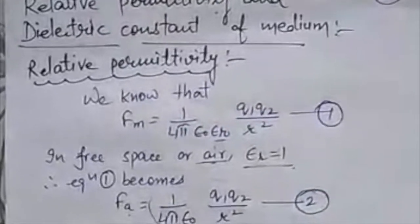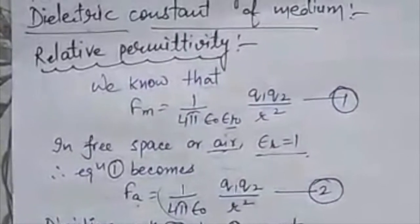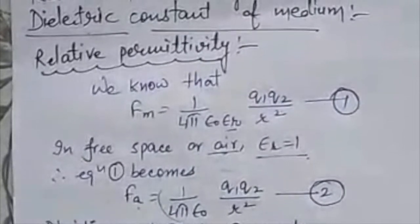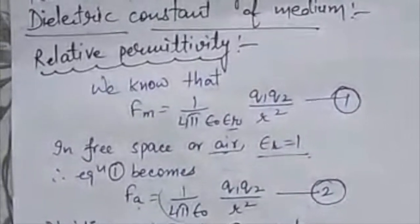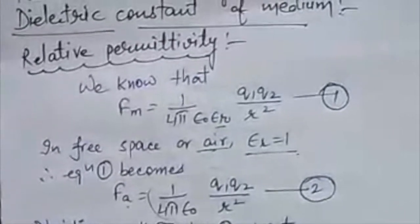Students, let us start the next topic: relative permittivity and dielectric constant of medium. You know we have done a little bit about the relative permittivity as a symbol epsilon r. So now let us define it in detail.